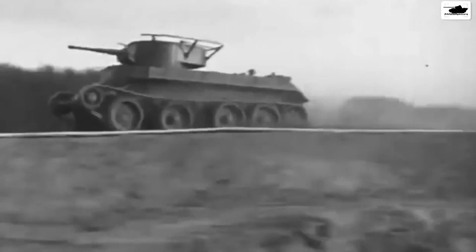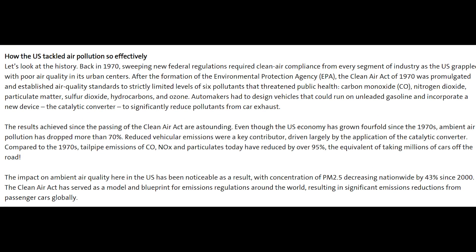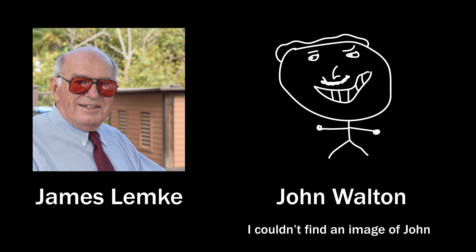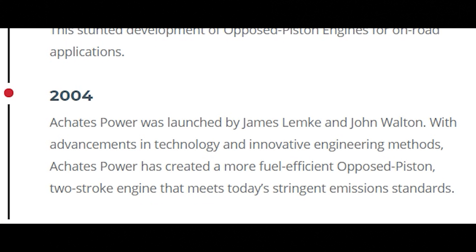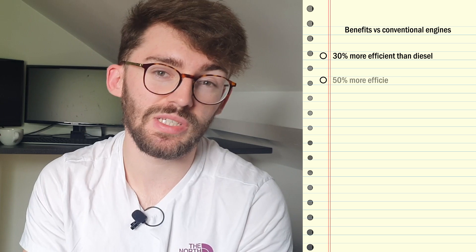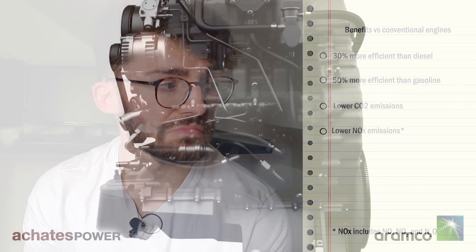Over 900 of these were produced and used in airplanes on both sides of World War II. As well as aircraft, opposed piston engines were also used in submarines, Russian tanks, trains, and even trucks. However, in the 1970s the US enacted the Clean Air Act, which effectively stunted the development of opposed piston engines for road use for the next few decades because these engines couldn't meet emissions standards. That is until 2004, when James Lemke and John Walton founded Achates Power. The company's goal was to develop a two-stroke opposed piston engine that could meet modern emission standards, claiming it is 30% more efficient than a diesel engine and 50% more efficient than a gasoline engine, with lower CO2 and NOx emissions. So it seems like a win-win.